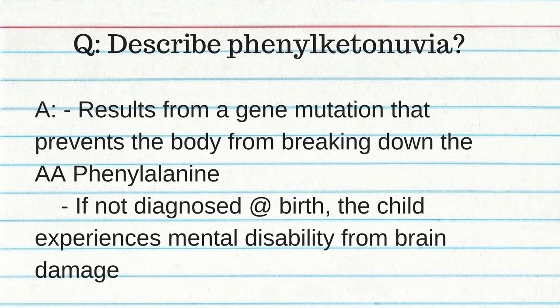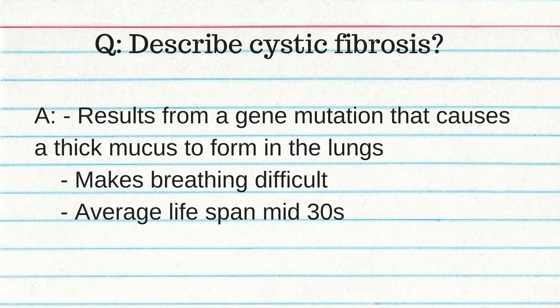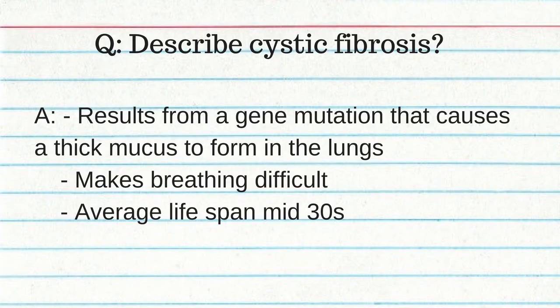Phenylketonuria results from a gene mutation that prevents the body from breaking down the amino acid phenylalanine; if not diagnosed at birth, the child experiences muscle disability and brain damage. Cystic fibrosis results from a gene mutation that causes thick mucus to form in the lungs, making breathing difficult — average lifespan is in the mid-30s.